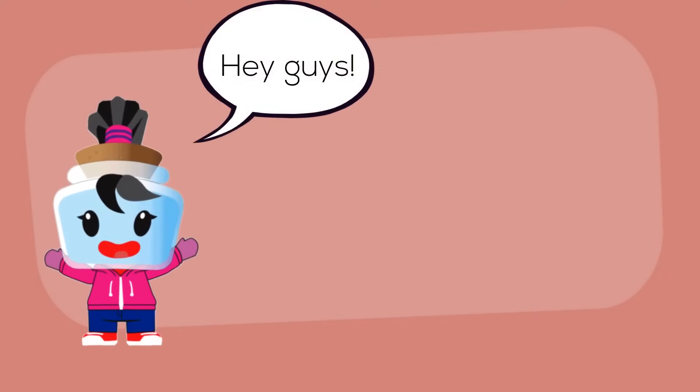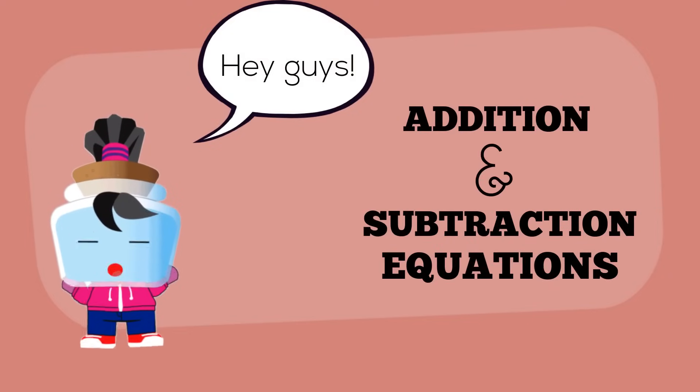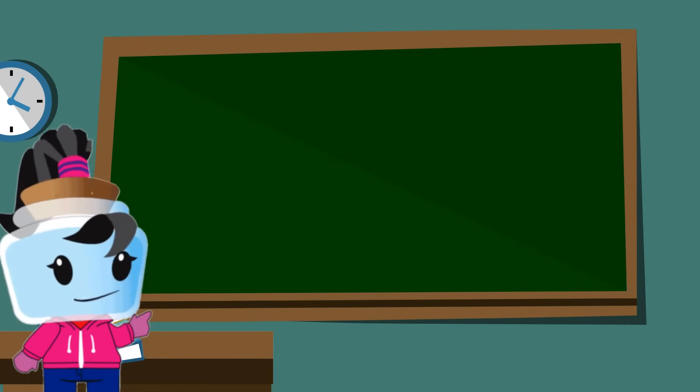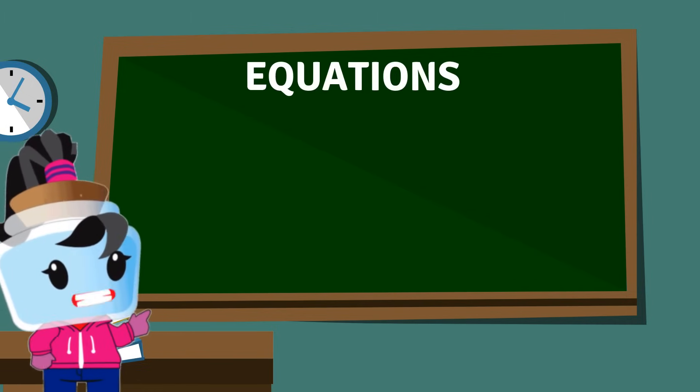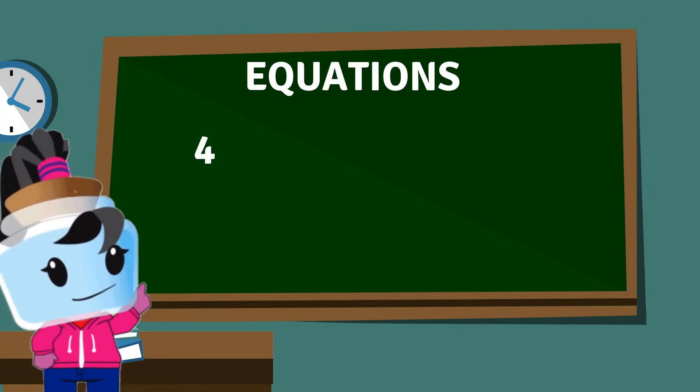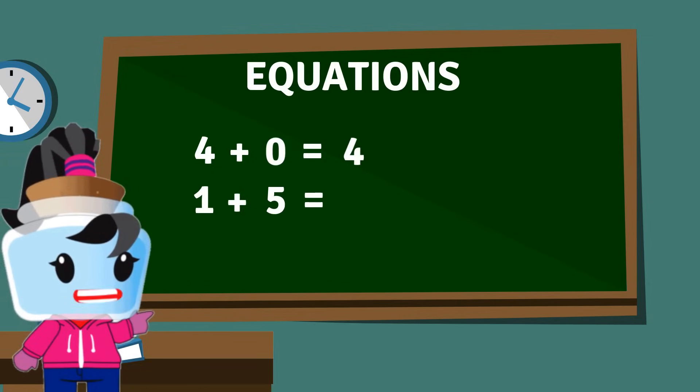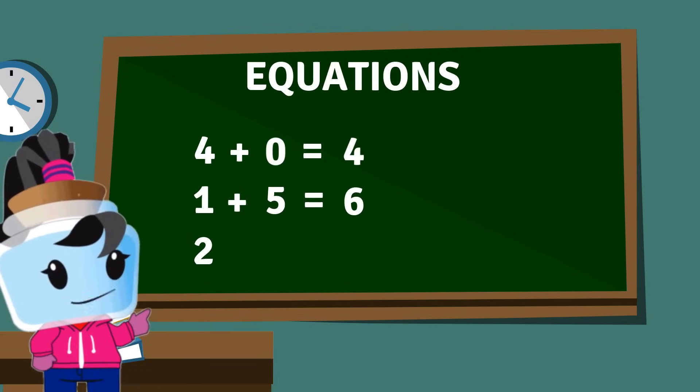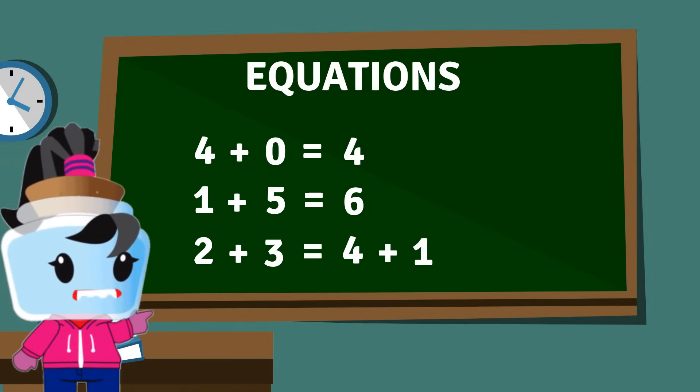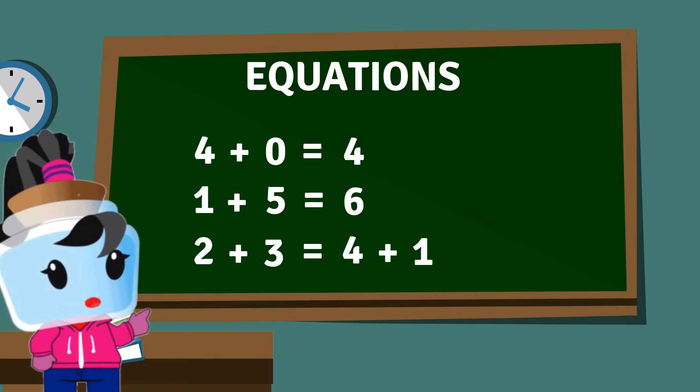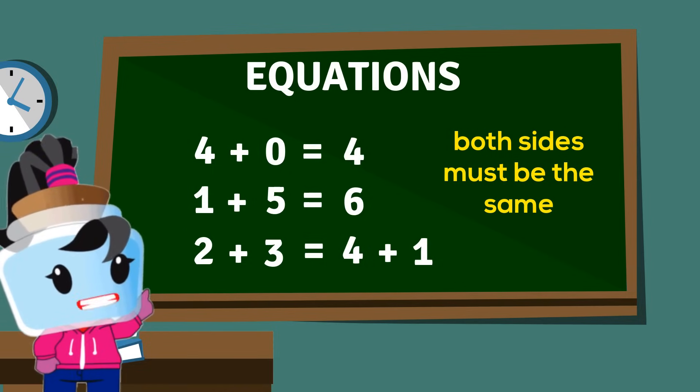Hey guys, today we will be working with addition and subtraction equations. First, let's find out what equations are. Here are some examples: 4 plus 0 equals 4, 1 plus 5 equals 6, 2 plus 3 equals 4 plus 1. As you can see, equations have an equal sign and both sides of the equal sign must be the same value.